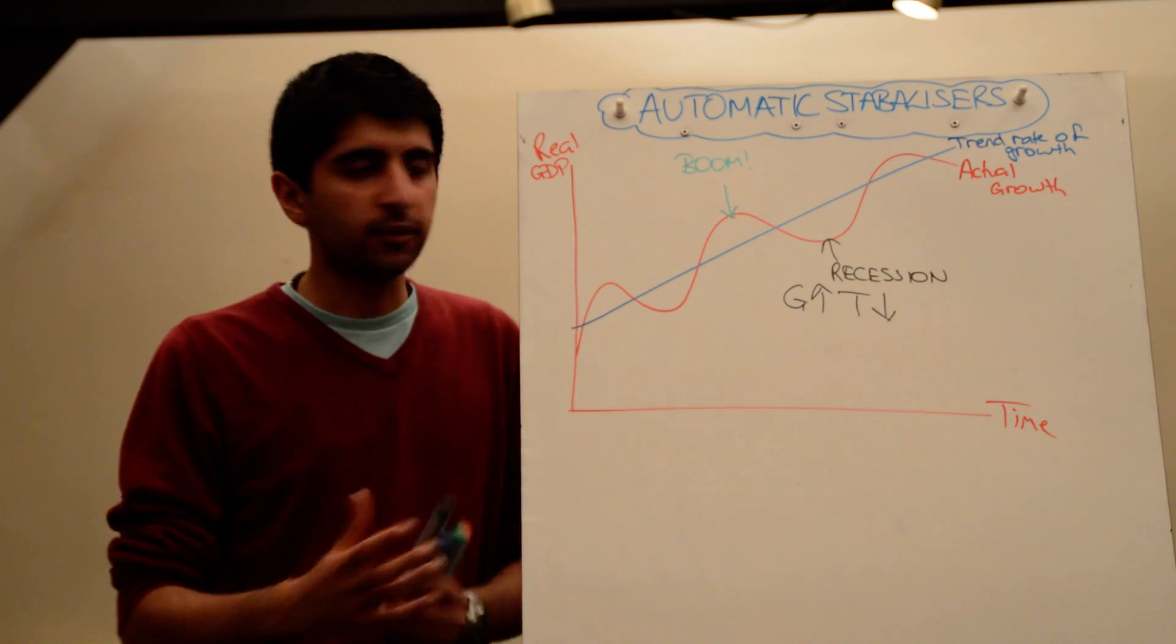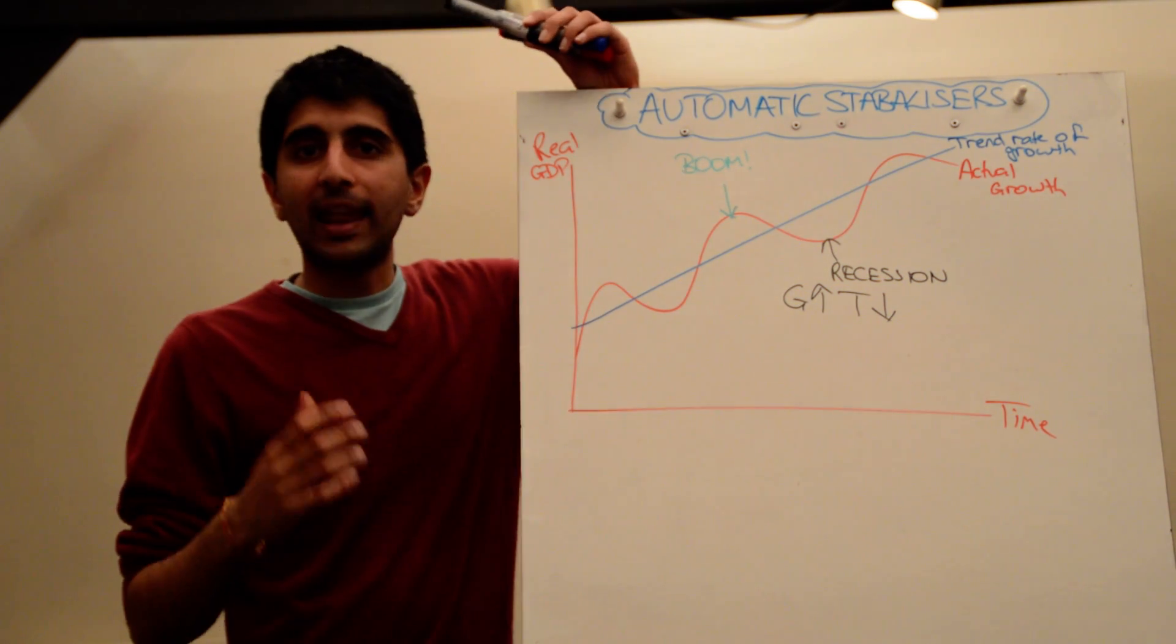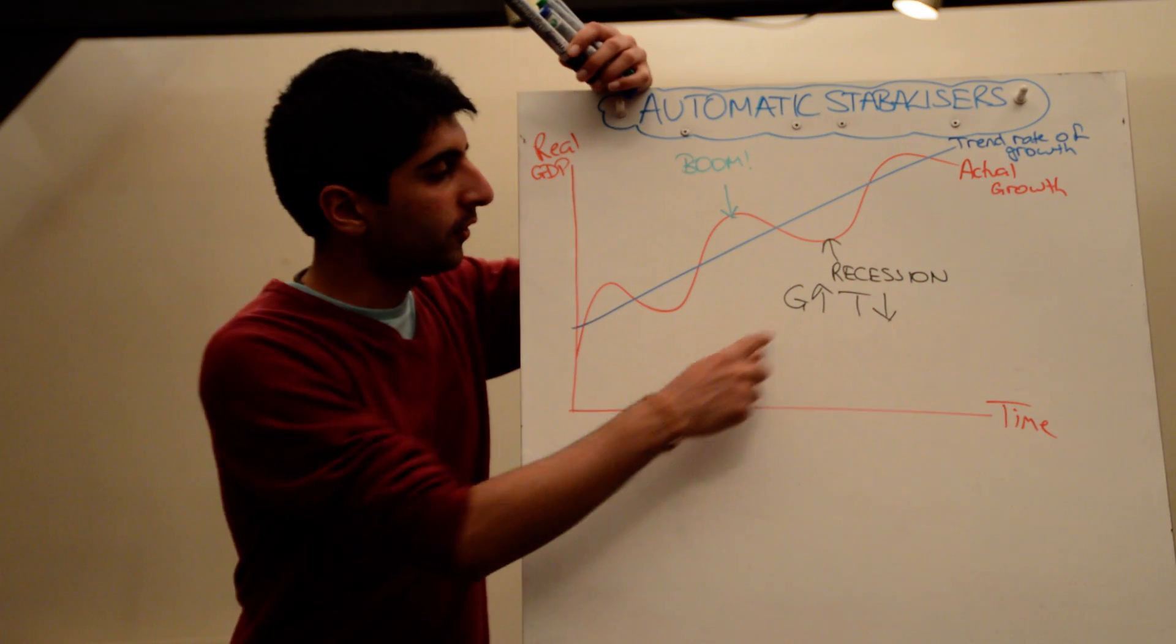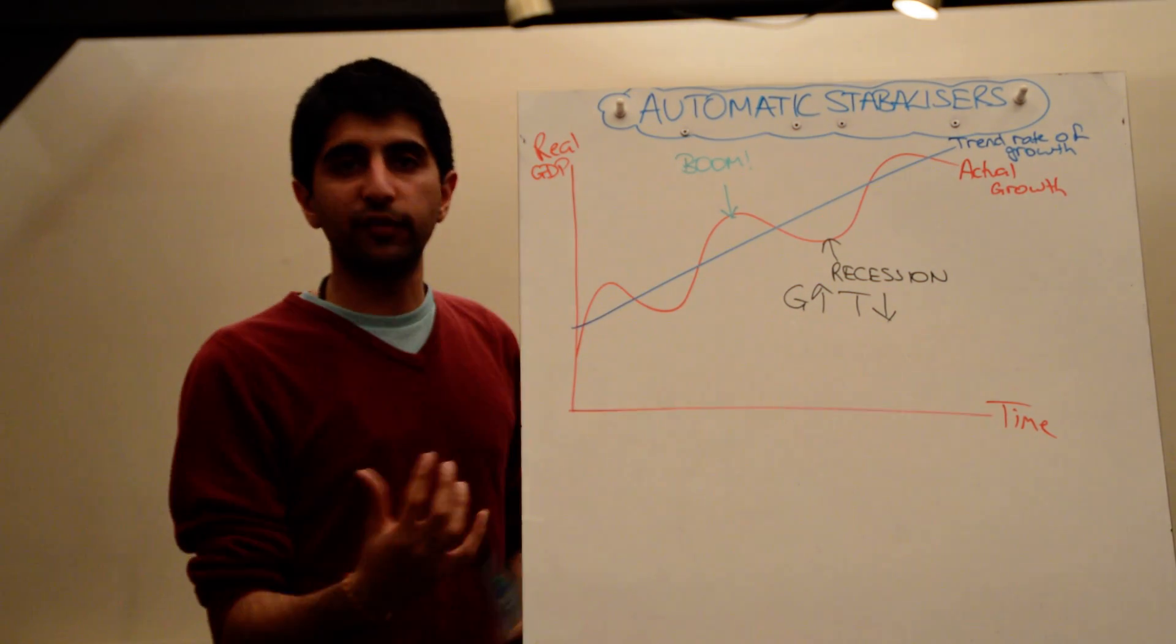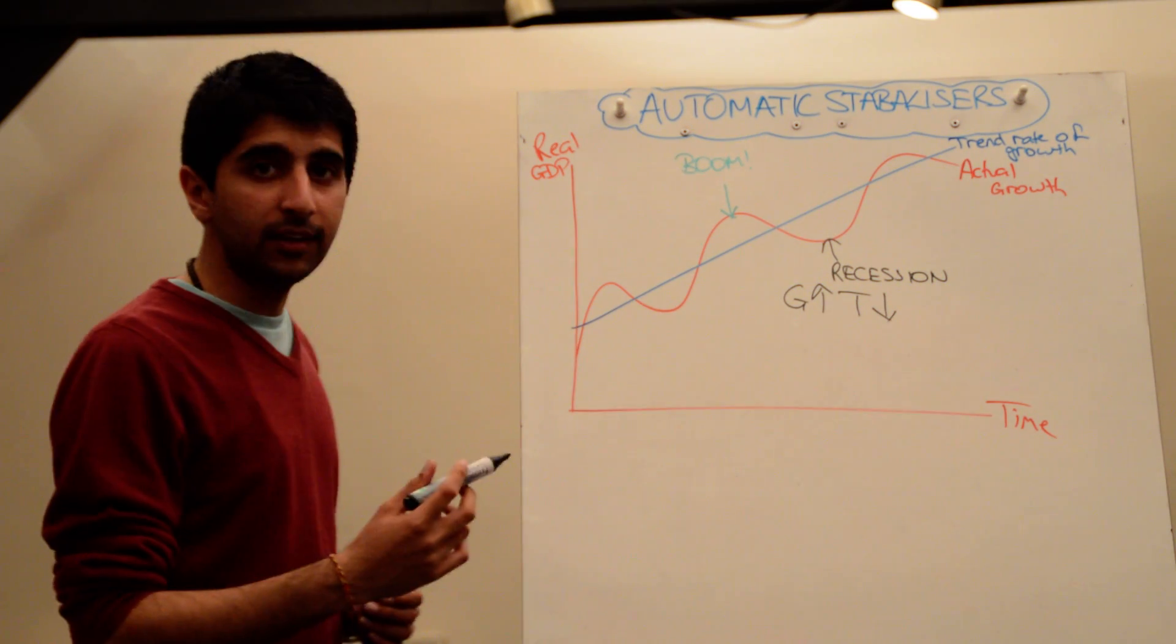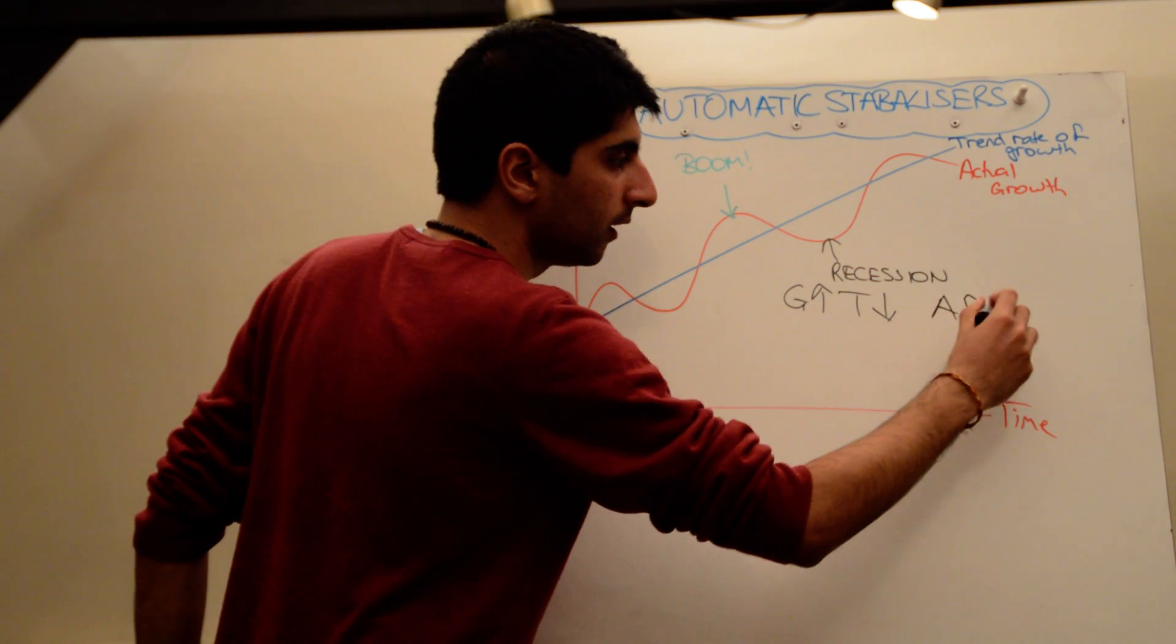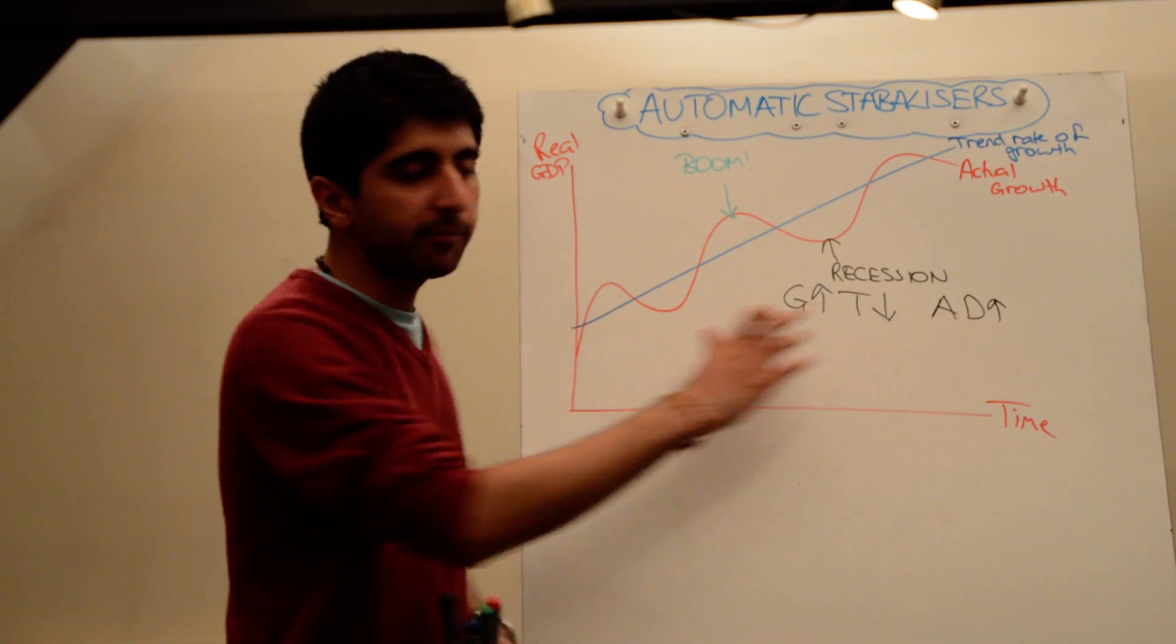At the same time, businesses are not going to be making as many profits, they are not going to be as confident in terms of investments. Overall business profits are going to fall and therefore the level of corporation tax collected by government is also going to fall. So government spending on benefits will rise, tax revenue collected is going to fall.